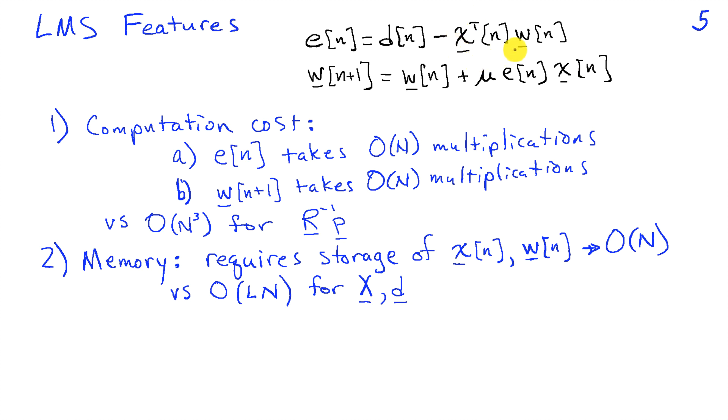In terms of memory, all we need in memory at any given point in time is the current value of d, the current value of x, and the current value of w. And since these are N dimensional vectors, this means we need to store on the order of capital N values at any given time. And recall, if we were going to do the normal equations, we were going to have to store x and d, and that takes on the order of L times N storage locations, since x is an L by N matrix.